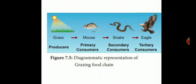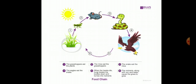So in each, at every step, one living organism is dependent on other living organism. See here, grasshopper eats grass, then mouse eats grasshopper, then snake eats that mouse. So here a food chain is shown.